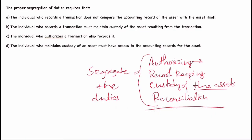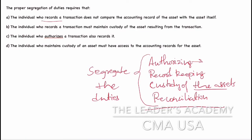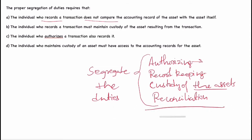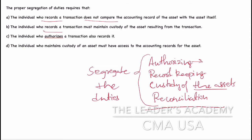On this basis, let's look at Option B: the individual who records a transaction must maintain custody of the asset resulting from the transaction — he is recording as well as maintaining custody. Recording and maintaining combined is not fine, so this cannot be the answer. Option C: the individual who authorizes a transaction also records it — authorizing and recording combined, so this cannot be the answer either.